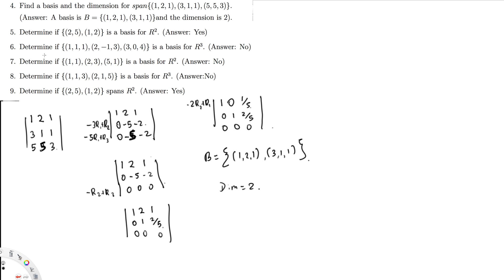The next question is: determine if (1, 1, 1), (2, -1, 3), (3, 0, 4) is the basis of R3. So what we have to do is check whether these three vectors are linearly independent. If they are linearly independent, then it's yes. Let's do Gauss-Jordan elimination. Setting up the matrix: row 1 is 1, 1, 1; row 2 is 2, -1, 3; row 3 is 3, 0, 4.